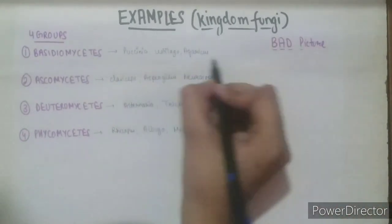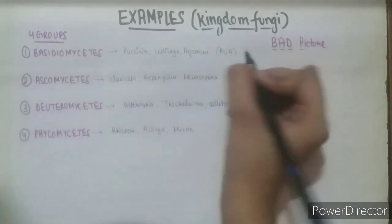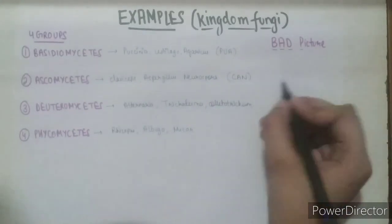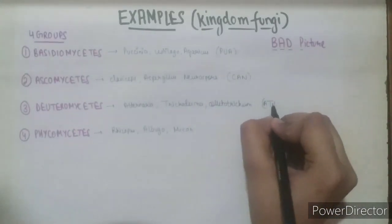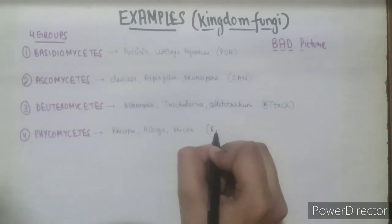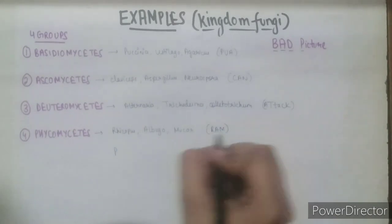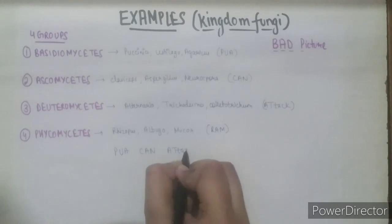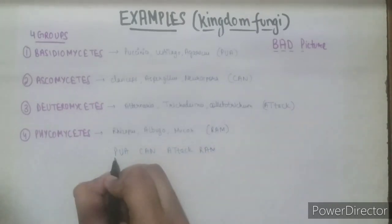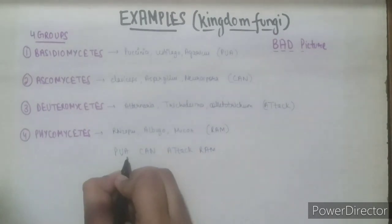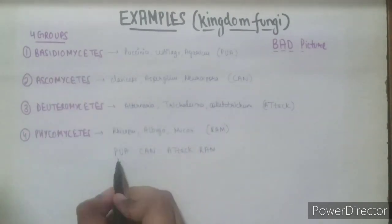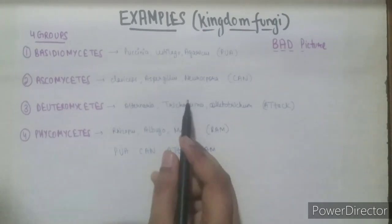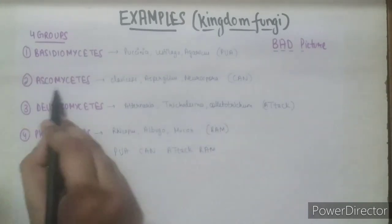So, this can be learnt by the mnemonic 'Pua can attack Ram.' P for Puccinia, U for Ustilago, A for Agaricus — which are of the group Basidiomycetes. C for Claviceps, A for Aspergillus, and N for Neurospora — which are of Ascomycetes.